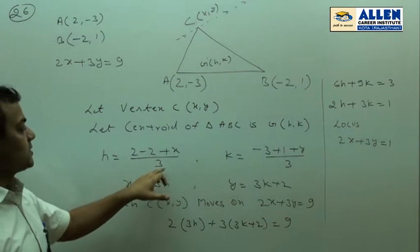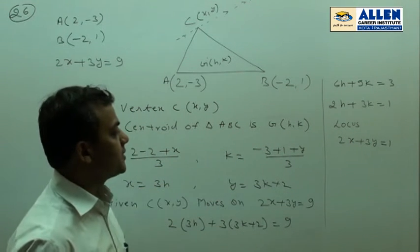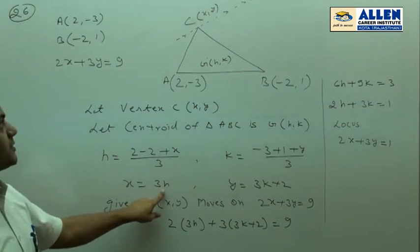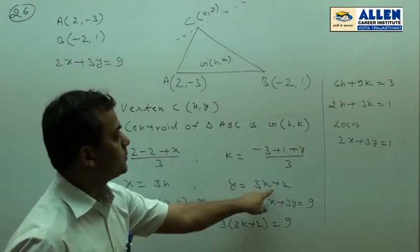Now, h equals (2 minus 2 plus x) by 3 and k equals (minus 3 plus 1 plus y) by 3. So, solving this, we get x equal to 3h and y equal to 3k plus 2.